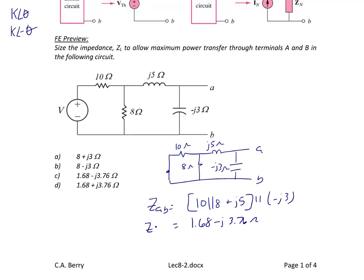So Z_AB is Z_Thevenin. The load for maximum power transfer is Z_Thevenin conjugate, which would be 1.68 + j3.76 Ω. So the answer would be letter D.